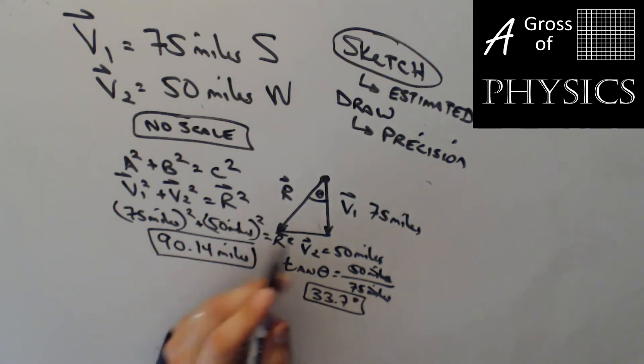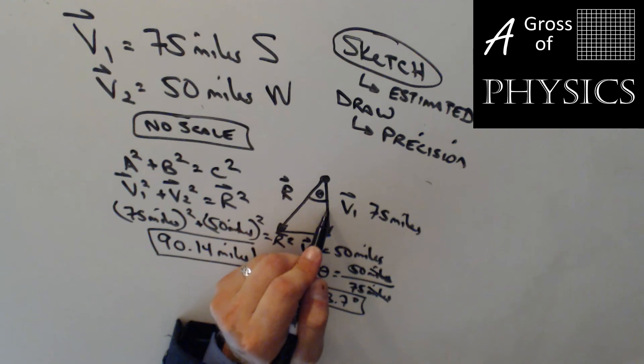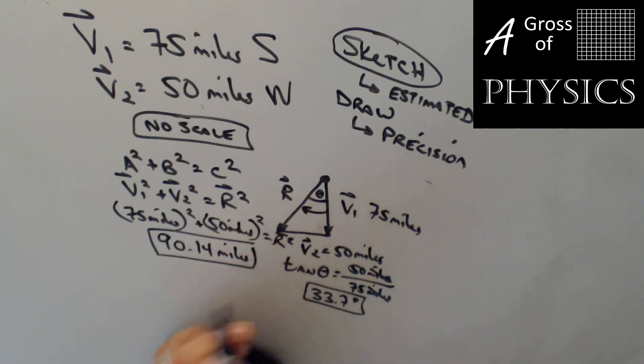Putting them together, that's why I have the sketch. I need to know if it's north, south, east, west, and what direction we have. Since I started in the south and I went to the west, we're going to say west of south. So my final resultant is 90.14 miles at 33.7 degrees west of south.